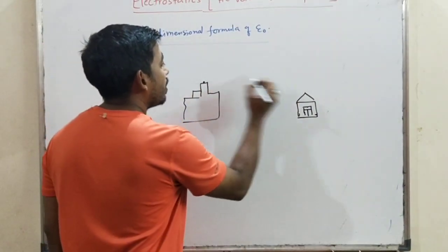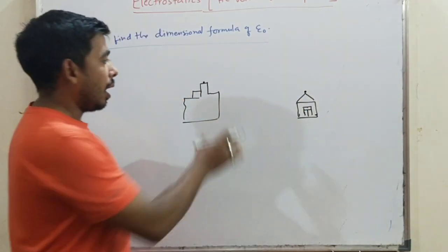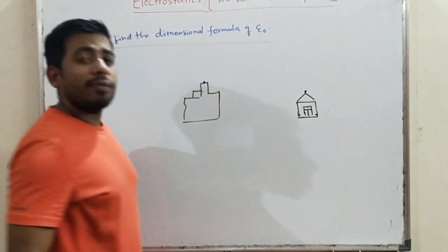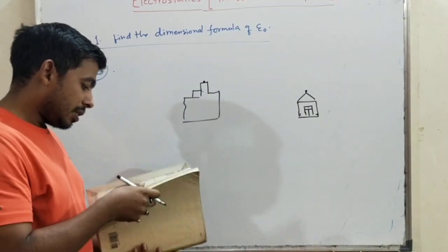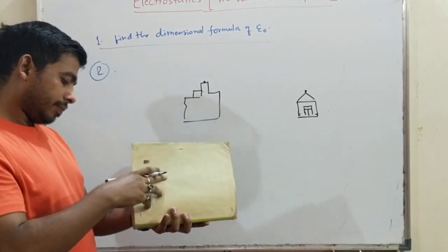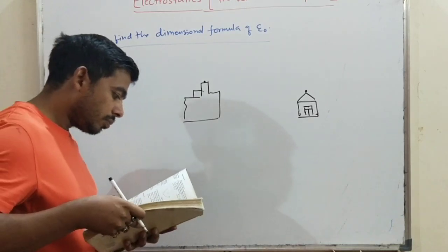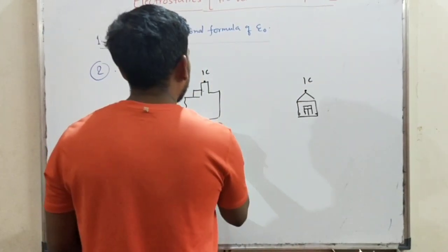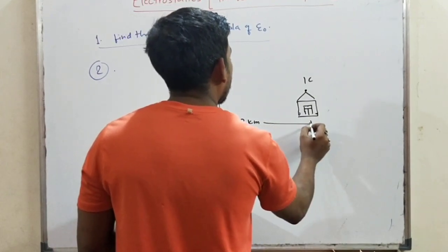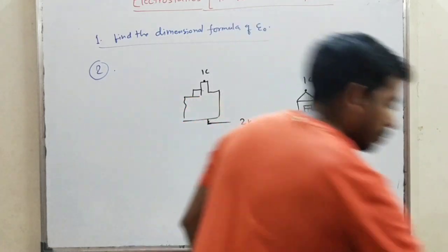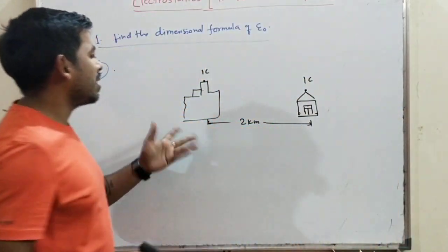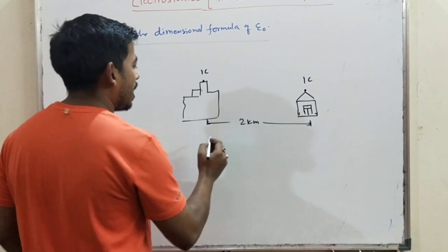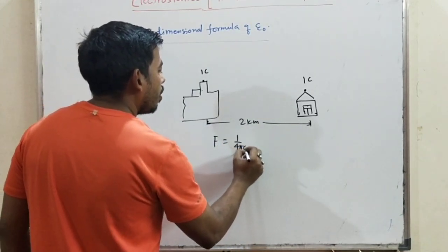दो equal charges आपके घर के top पे और college building पे रख लिए जाते हैं। Separation क्या है — charge 1 coulomb है और distance दोनों के बीच में 2 kilometer लेना है। बहुत simple सवाल है, Coulomb's law का formula लगाना है। Force होता है: F = (1/4πε₀) × (Q1·Q2)/r²।